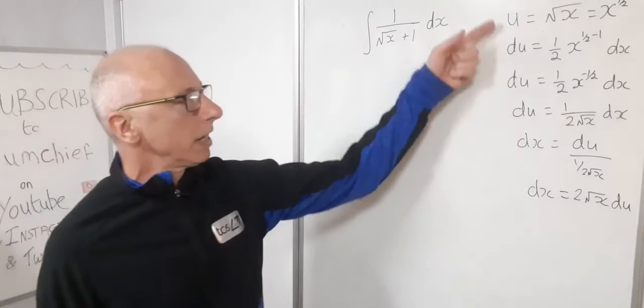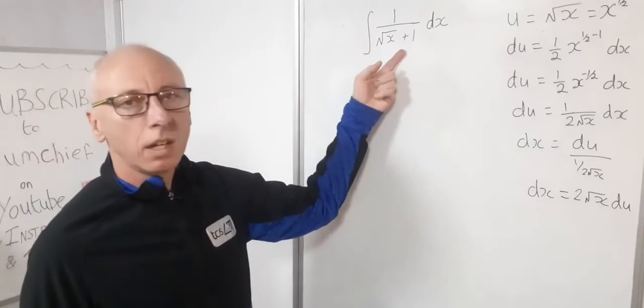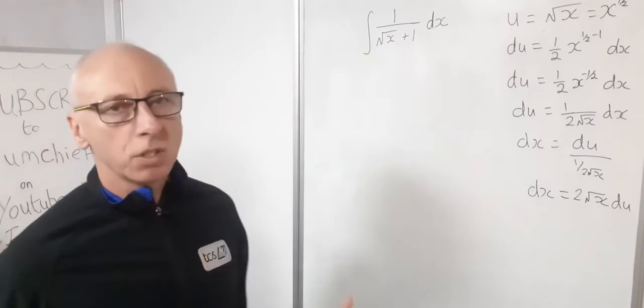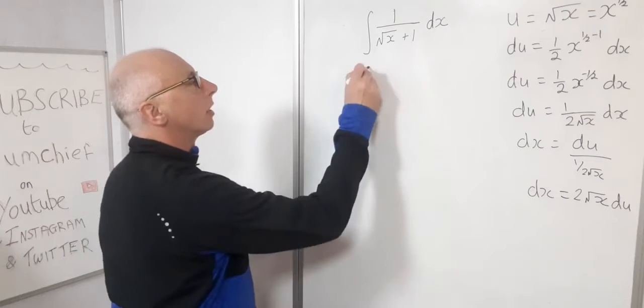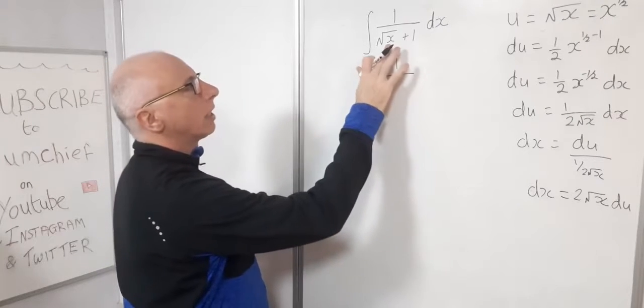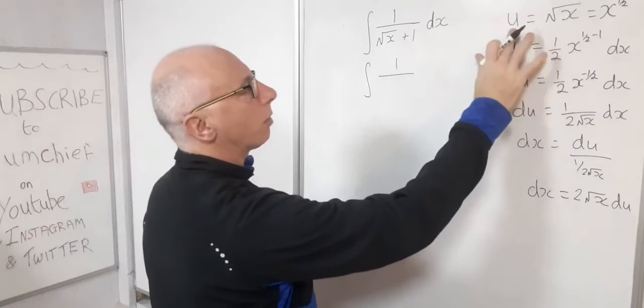So now we've got all our bits ready to plug in our u substitution. So that's quite a lot of working out just to get ourselves ready. So now we'll reset up this integral one over square root of x. Well, that is just u.